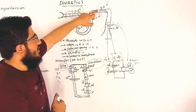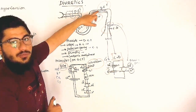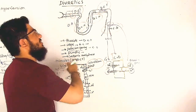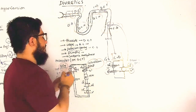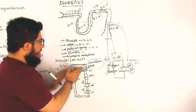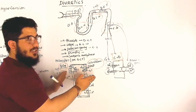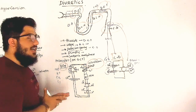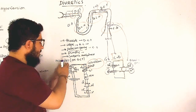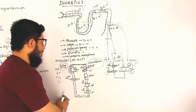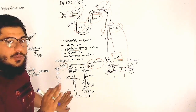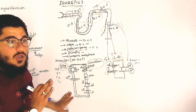A short review: at the distal convoluted tubule, the normal action is reabsorption of sodium and chloride from the lumen to the interstitium where blood flows. Thiazide blocks the sodium-chloride co-transporter, so sodium flows with potassium, calcium, and others into the urine, and potassium loss is increased.